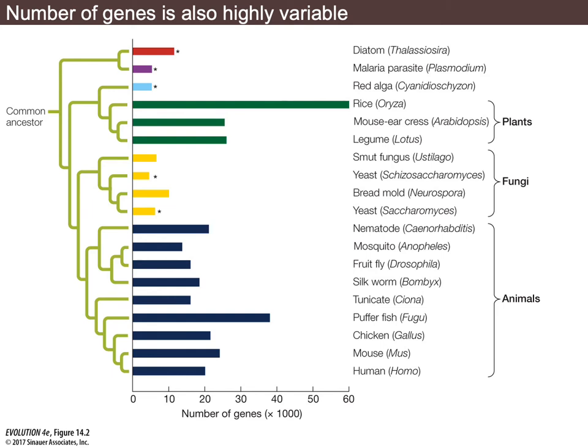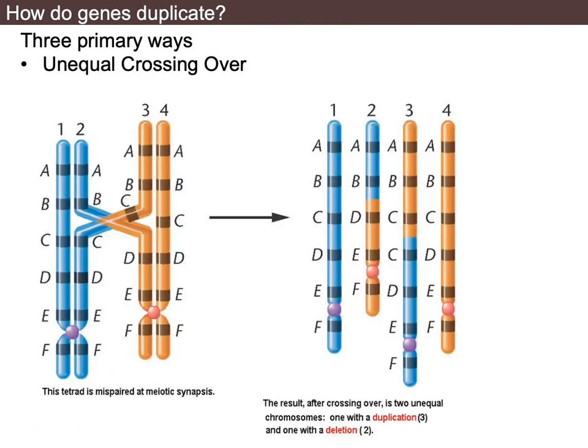So how do we end up with different numbers of genes? How do species evolve different numbers of genes — why would one fish have more genes than another fish, or one plant more than another? That's really where this chapter starts to get interesting. There are three ways we're going to talk about genes duplicating or increasing in number within a biological organism, within a lineage.